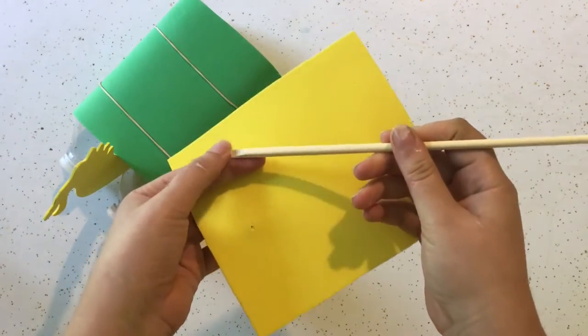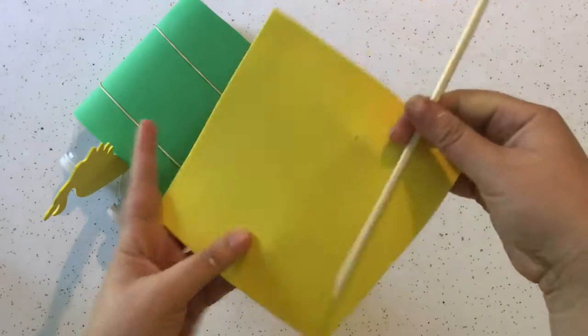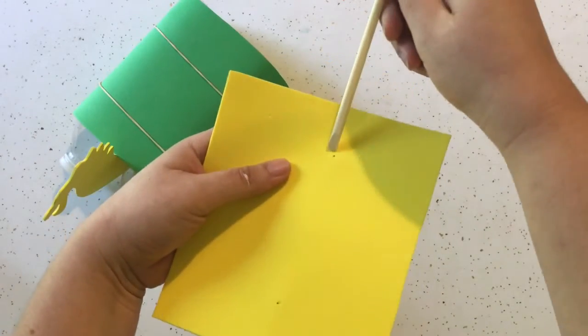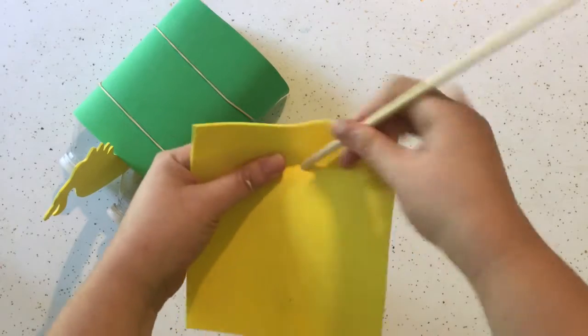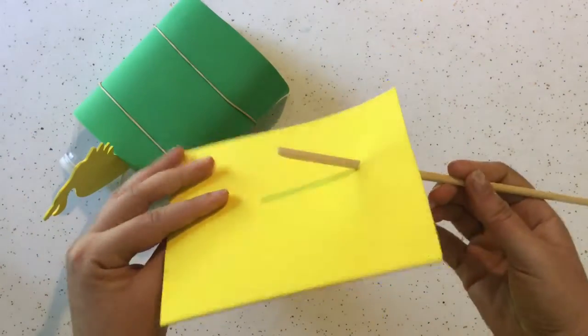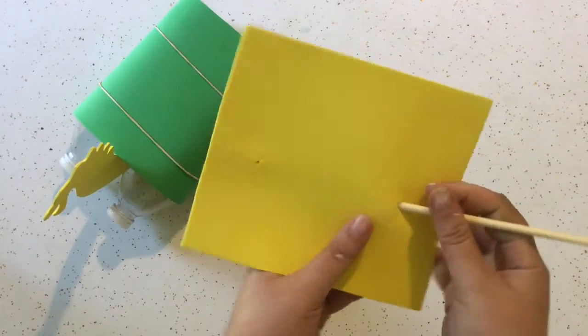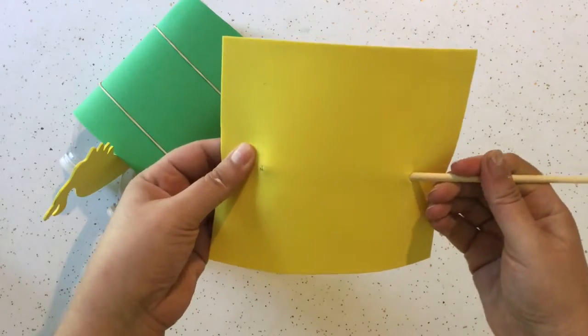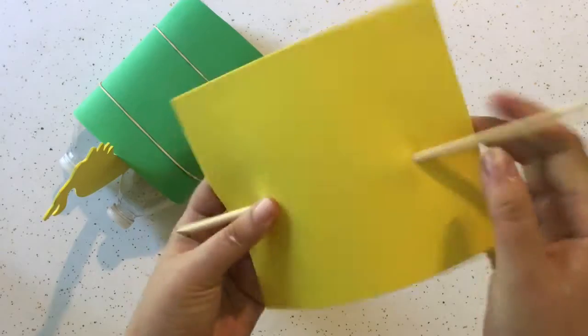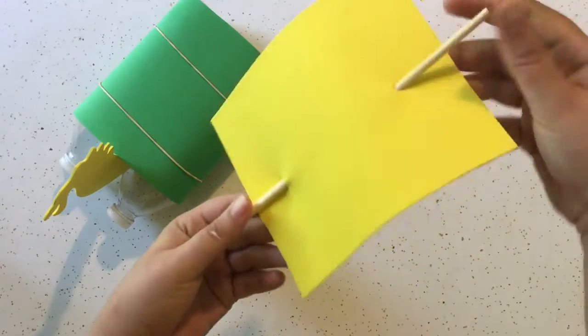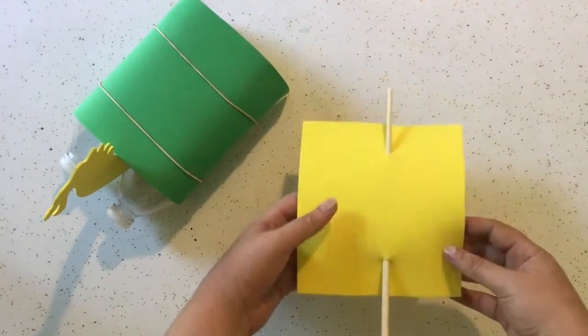Then you're going to take your stick. You probably have kind of a point to your end on one end. You're going to take your stick and poke it through, kind of wiggle it in there. And then poke it through this hole as well to bring it back to the front, just like that.